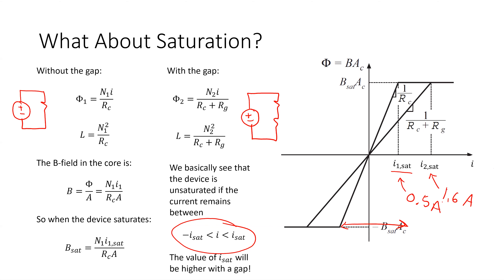The bottom line is: there's a peak B field that can ever exist in the material — a maximum B field. If I try to push the current further and further, which should make the B field bigger, the material can't support that. I can keep pushing more current in, but I get no more B field out of it. Once I reach that point, the material is saturated.